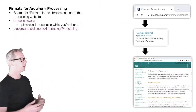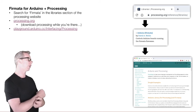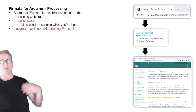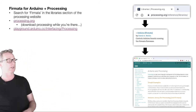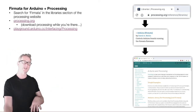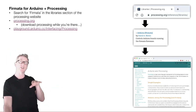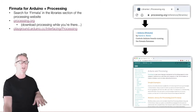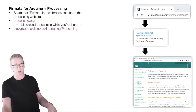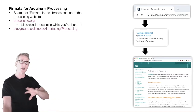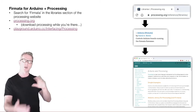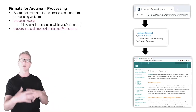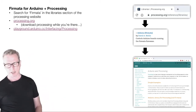You may or may not have heard of Processing. It's a creative coding environment very similar to p5.js. p5.js is written in JavaScript and runs in the web browser. Processing is written in Java and runs on the desktop. There are some differences because of that, but overall it's very similar to p5.js.